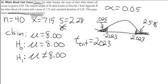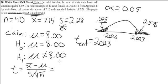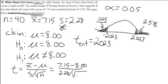Now we just have to calculate our actual test statistic. Since it's a t-test, our formula is x̄ minus mu, all over the standard deviation divided by the square root of n. Plugging in: 7.15 minus 8, divided by 2.28 over the square root of 40.